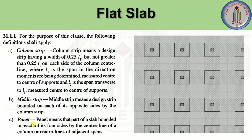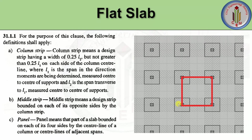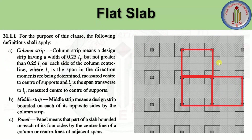Next is panel. Panel means that part of a slab bounded on each of its four sides by the center line of a column or the center line of an adjacent span. For example, with four columns, the area bounded from the center line of each column on all four sides is one panel. Similarly, we get multiple slab panels across the structure.